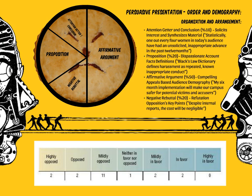Attention-getter: 'Statistically, one out of every four women in today's audience have had an unsolicited, inappropriate advance in the past 12 months.' Notice they're using a startling statistic to get the attention of the audience. In their proposition, one of the sample statements is: 'Black's Law Dictionary defined harassment as repeated, known, and inappropriate conduct.' In this instance, we see that they are using a clinical, sterile, dictionary definition of the term they're going to be speaking about, instead of something more inflammatory.